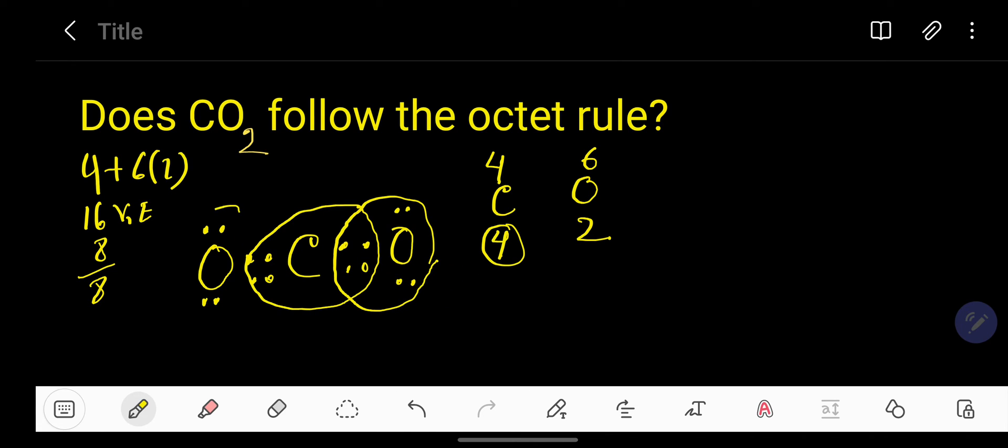And this oxygen has eight. So this oxygen is following the octet rule, this carbon is following the octet rule, and this oxygen is also following the octet rule. So we can say that CO2 follows the octet rule.